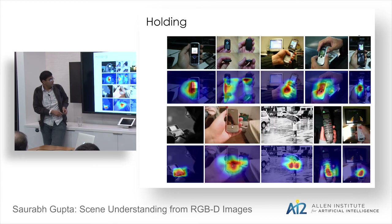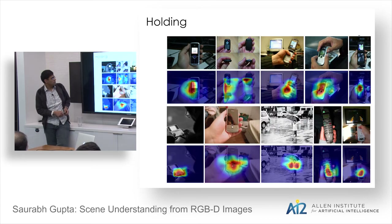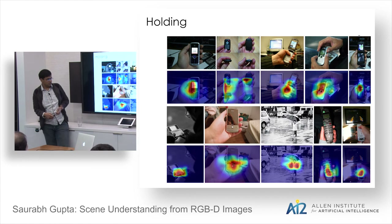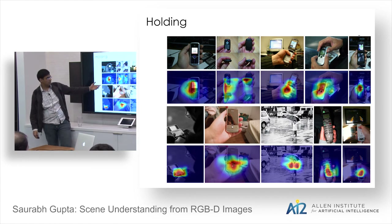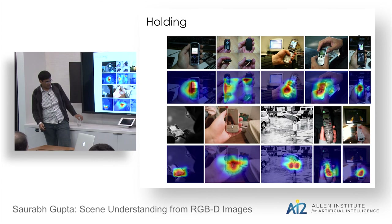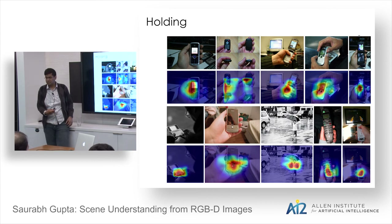Building on the interpretability aspect, we then started studying visual semantic role labeling (VSRL). Caption generation was hard to evaluate rigorously, so we wanted a more concrete task: detailed understanding of images that can be evaluated in a grounded manner.